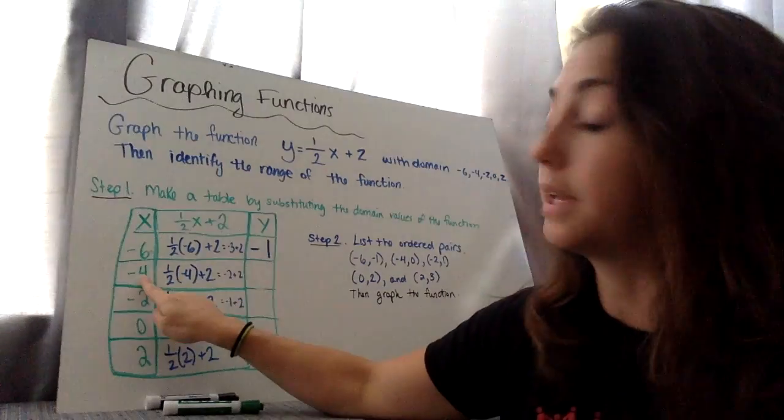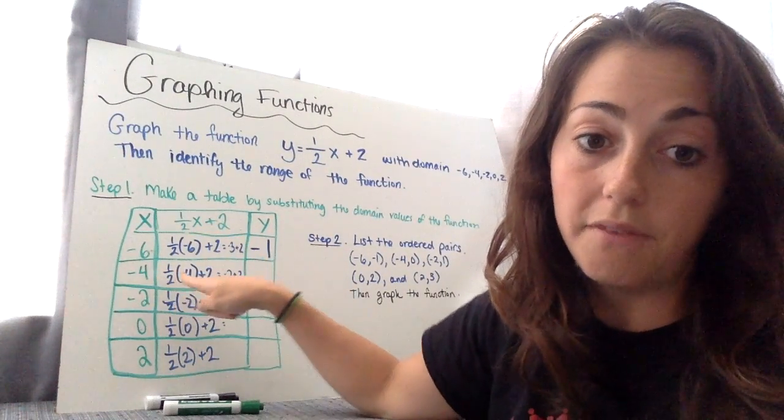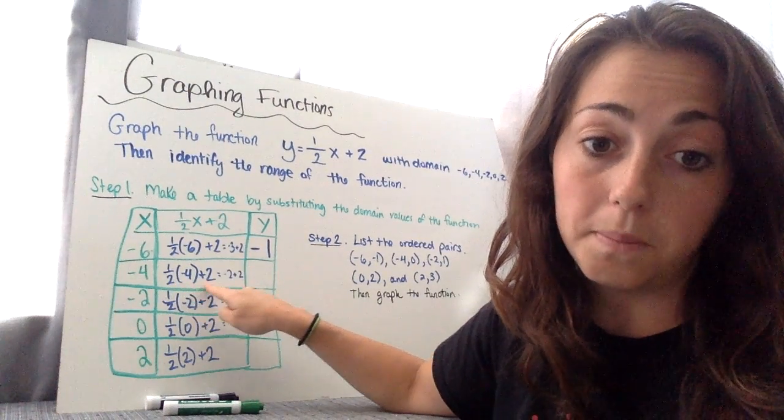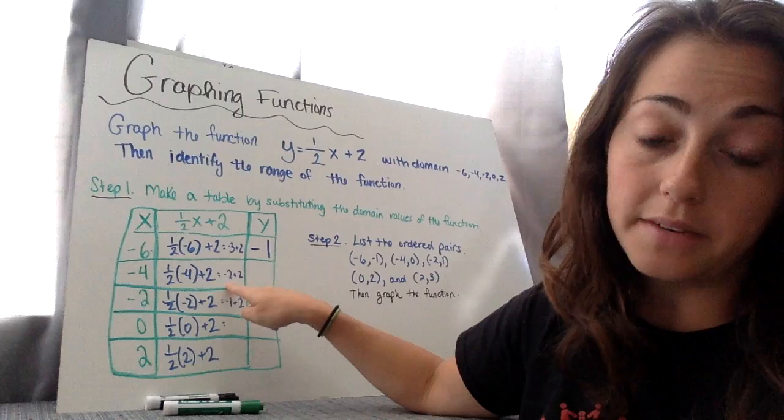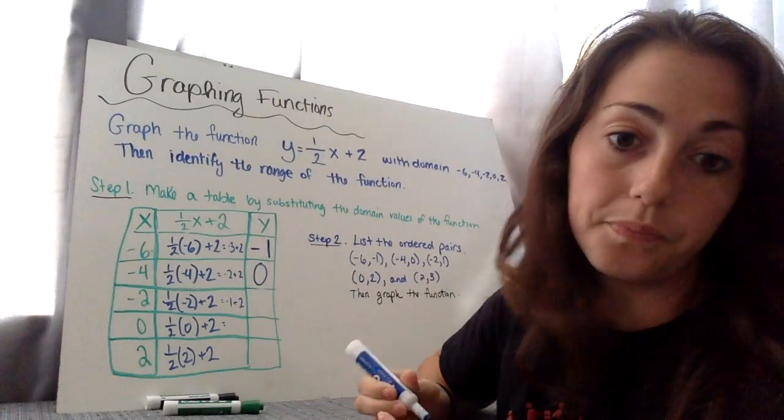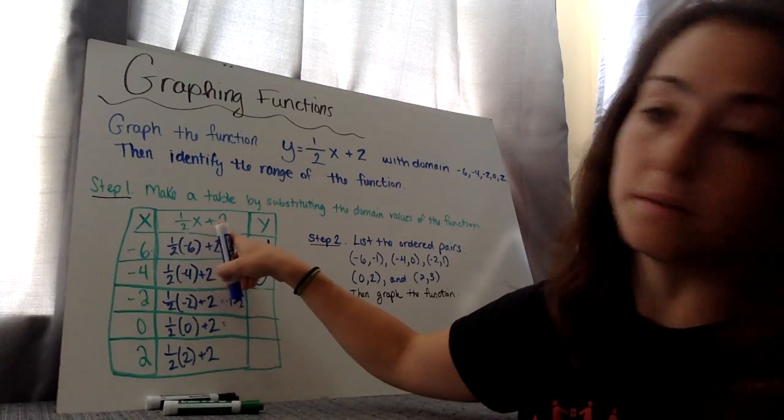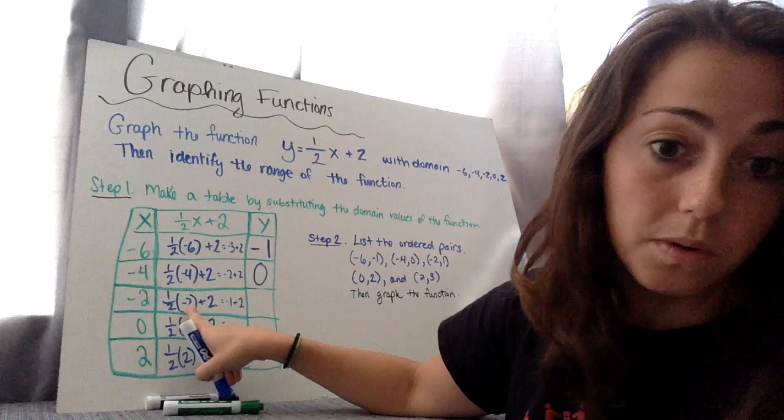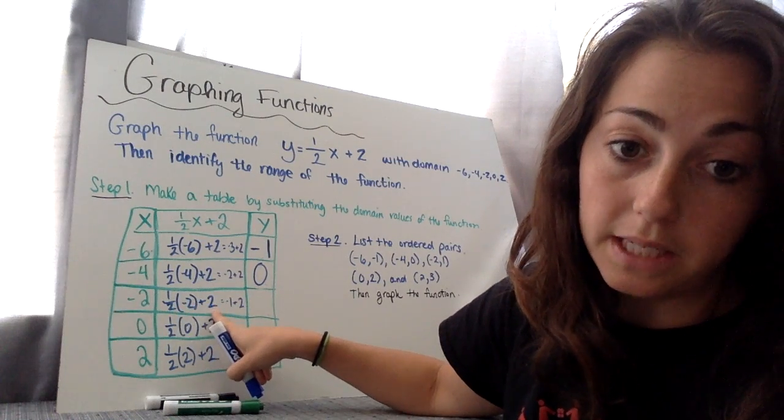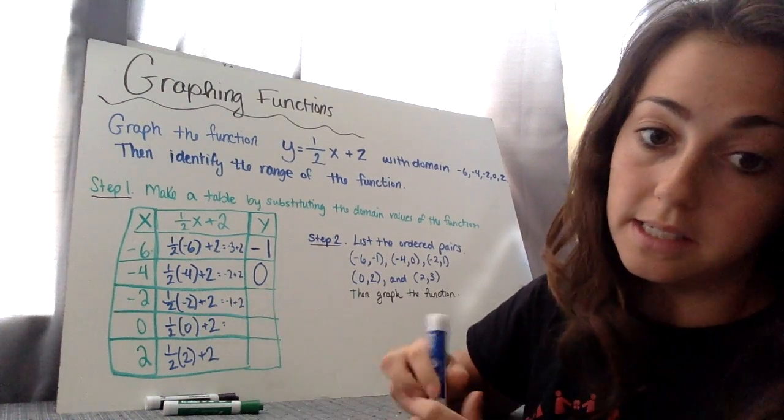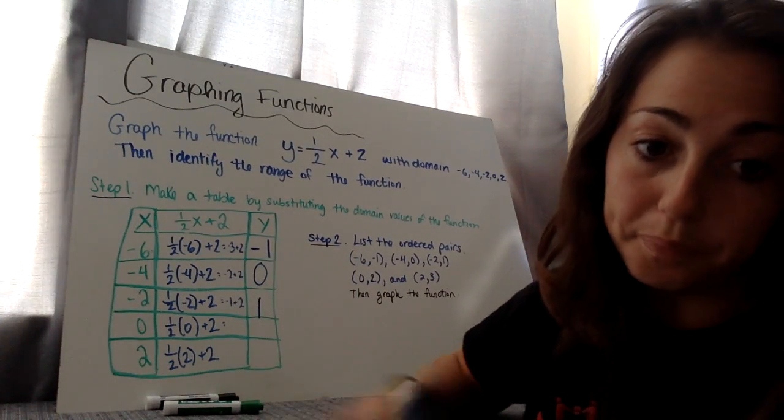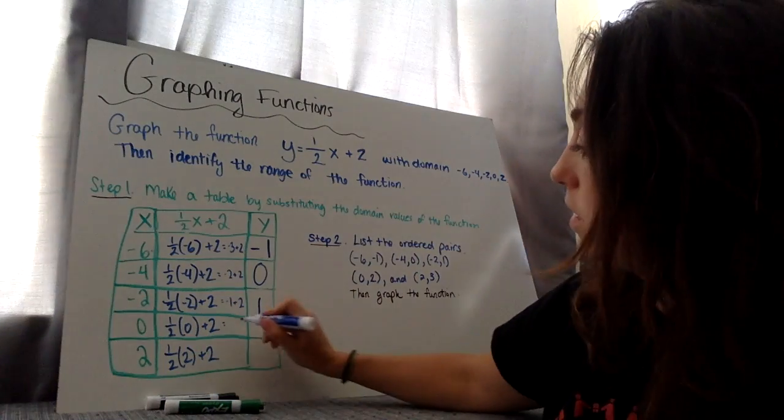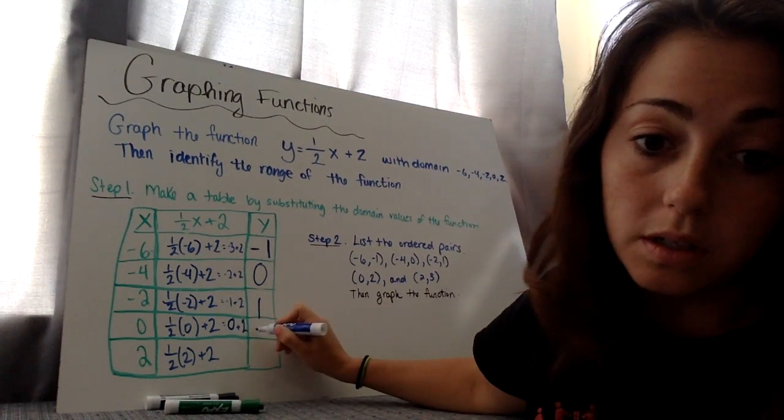Now we go into the next one. I'm plugging in negative 4 for my x value. Half of negative 4 plus 2, well, half of negative 4 is negative 2 plus 2, negative 2 plus 2 is 0. Half of x plus 2, now I'm plugging in negative 2 for x. Half of negative 2 is negative 1, negative 1 plus 2 is 1. Now plugging in 0. Half of 0 is 0, 0 plus 2 is 2.